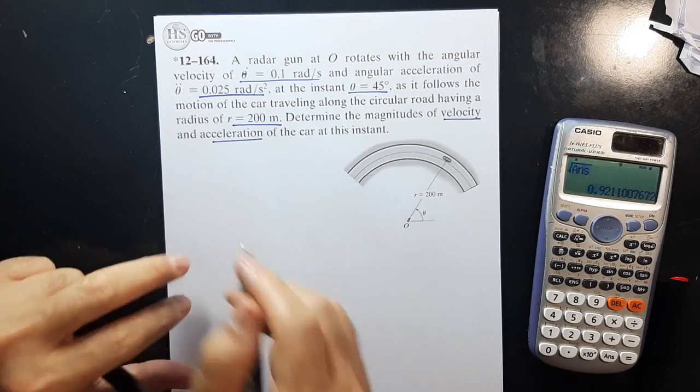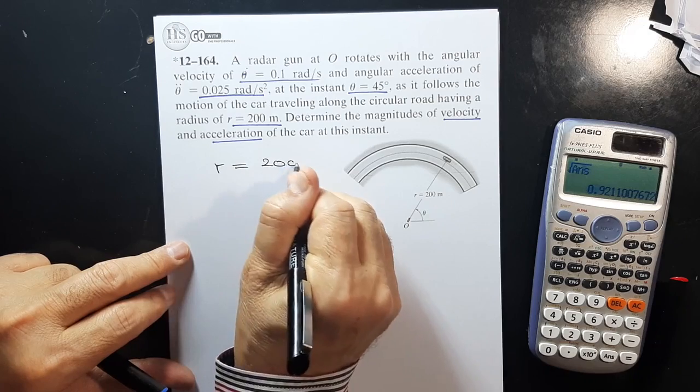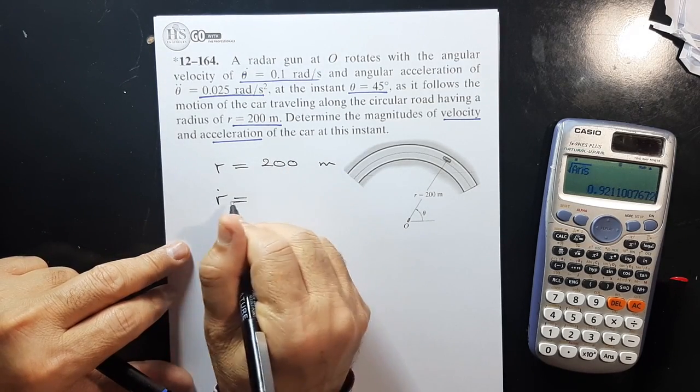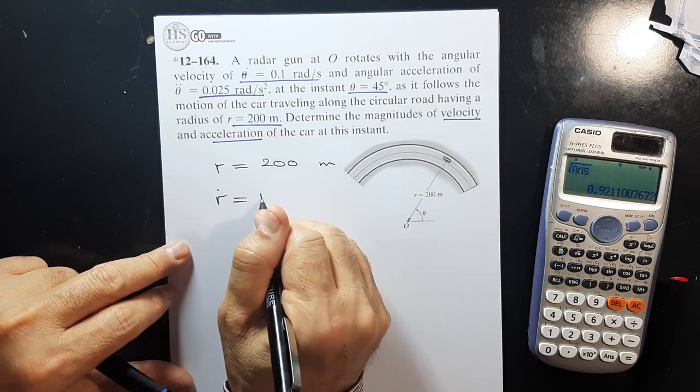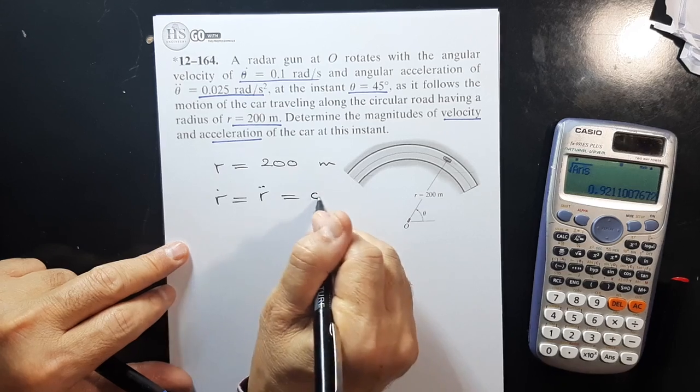Since r is constant, ṙ which is the radial component and r̈ which is the radial acceleration will enter into the calculation. ṙ = 0.